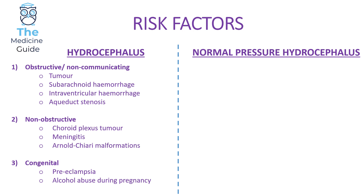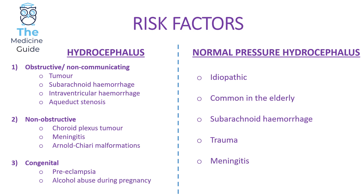Now let's look at the risk factors for developing a normal pressure hydrocephalus. It can be idiopathic and is commonly found in the elderly — a classic SBA will involve an elderly patient. It can also arise from a subarachnoid haemorrhage, trauma, or meningitis.